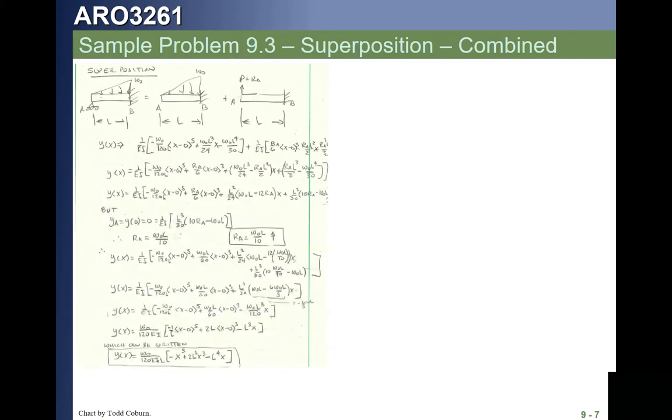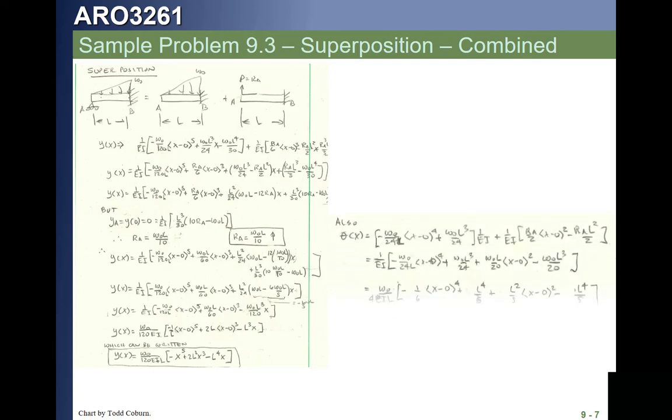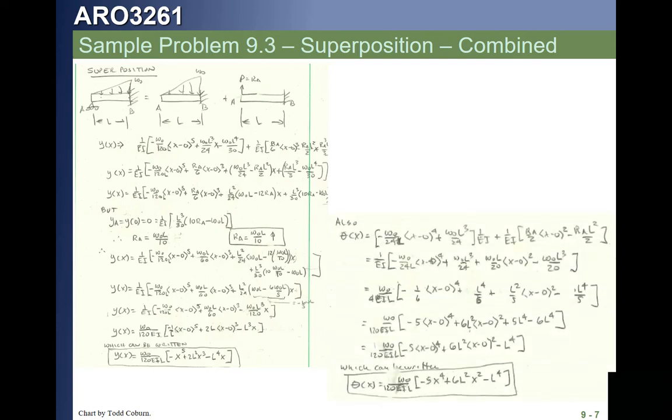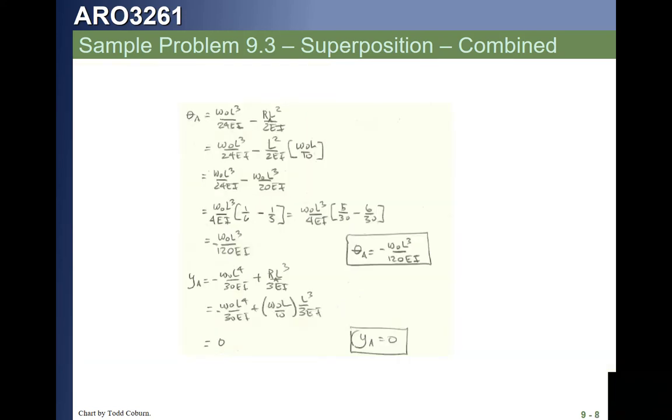So, taking the results, once again, we have this propped beam with a gradient loading. This consists of two pieces. One is a gradient load on a cantilever beam, and the other is an end load on a cantilever beam, where the end load represents the force in that constraint at A. So, superimposing our two results, we then get the equations of the combined loading, and can then solve the beam by combining that through algebra. As we see here, getting now the slope and the deflection at a single point.